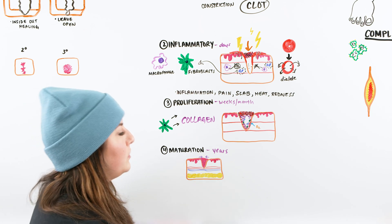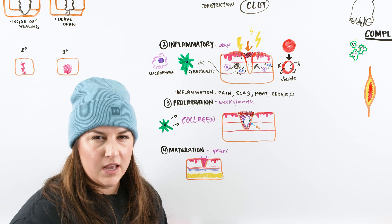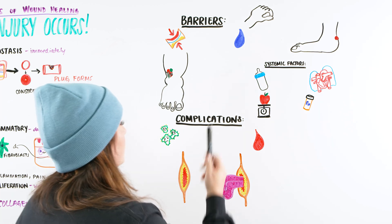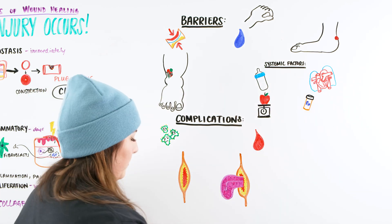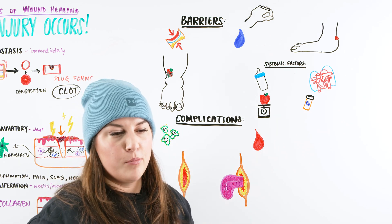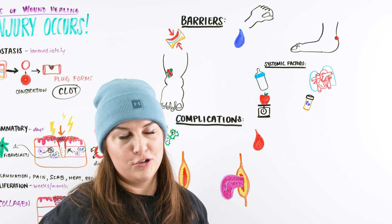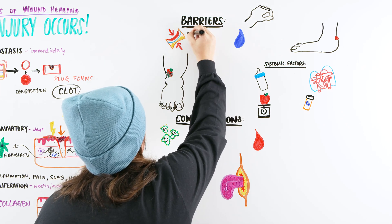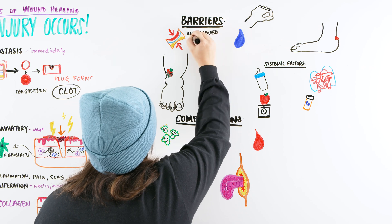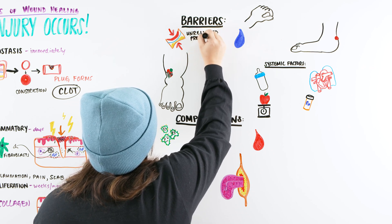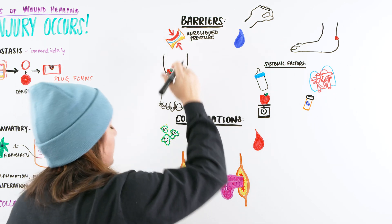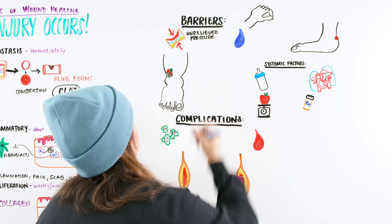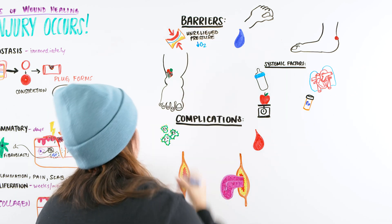Now let's talk about what would cause barriers for a patient to heal. One of them relates to the Braden Scale, which is used for detecting someone developing a pressure injury. A key component is unrelieved pressure — and the root cause is decreased oxygen or decreased blood flow to that area.